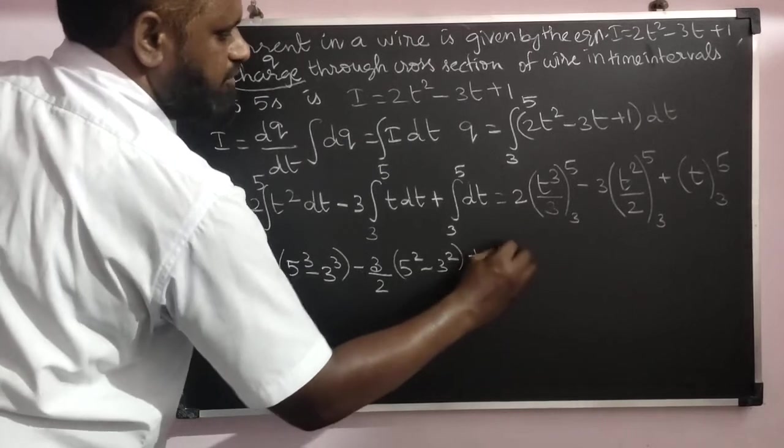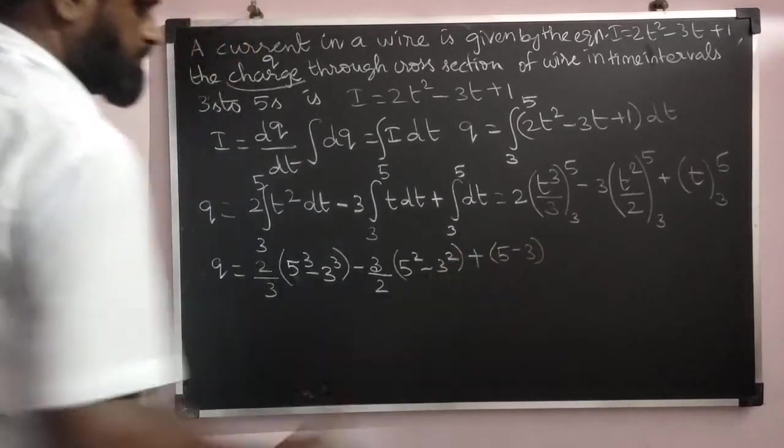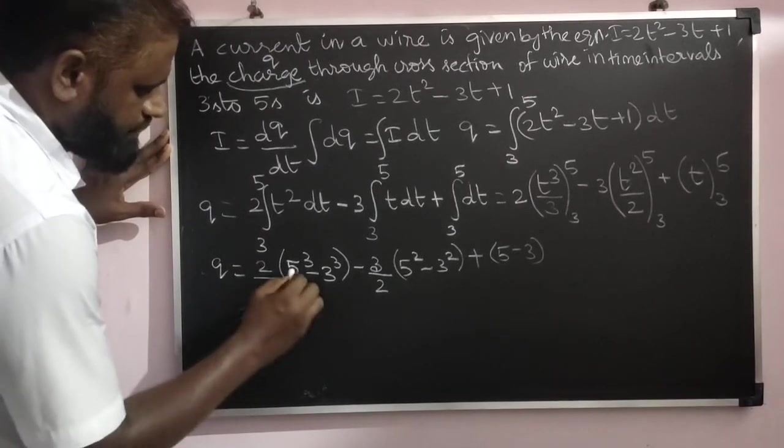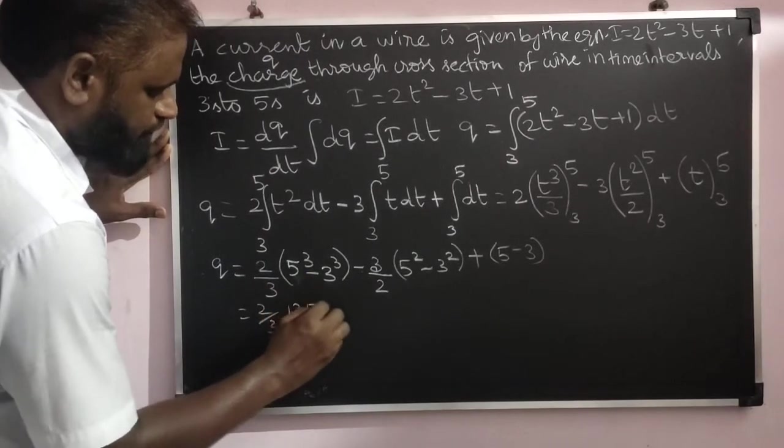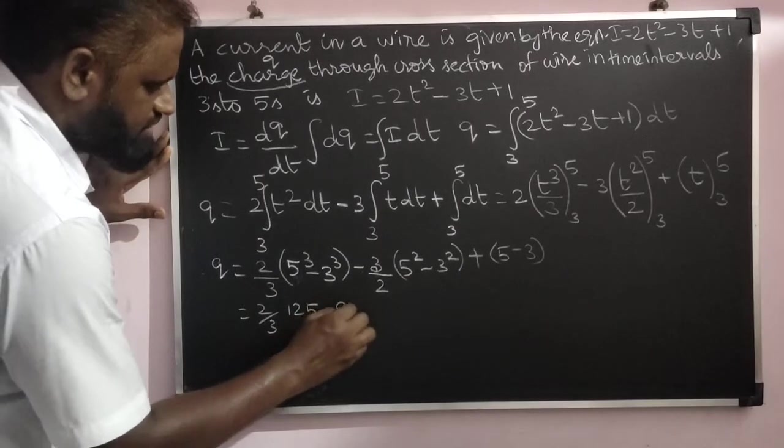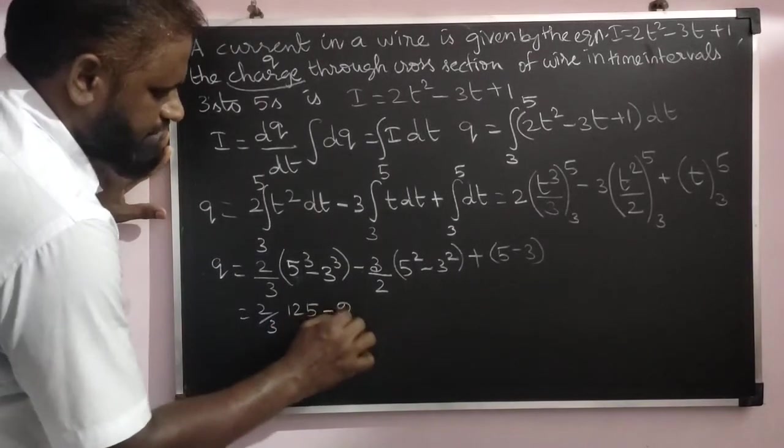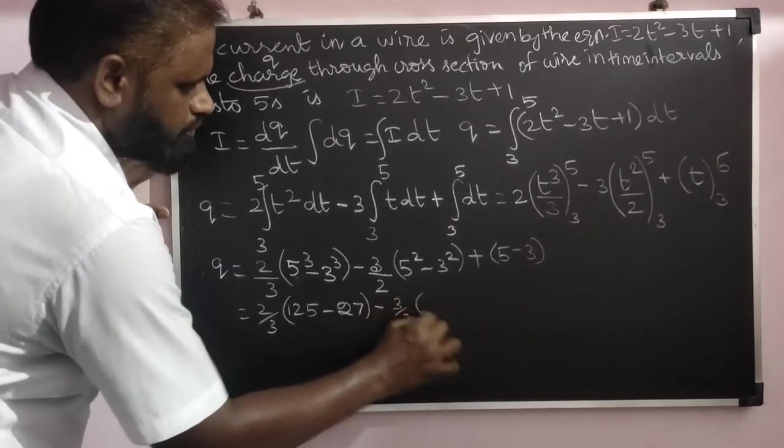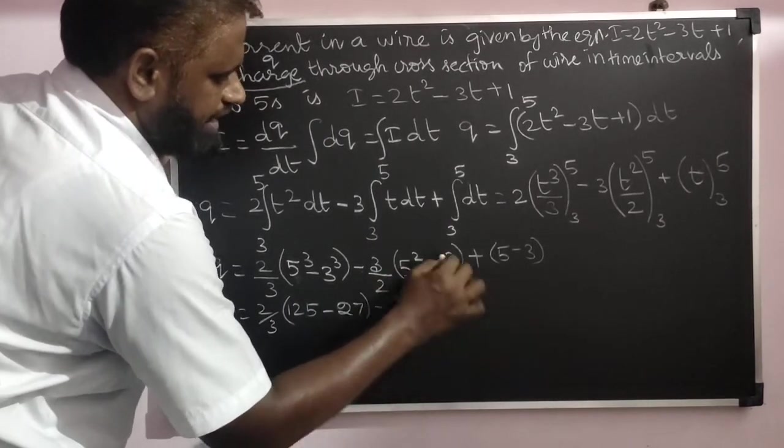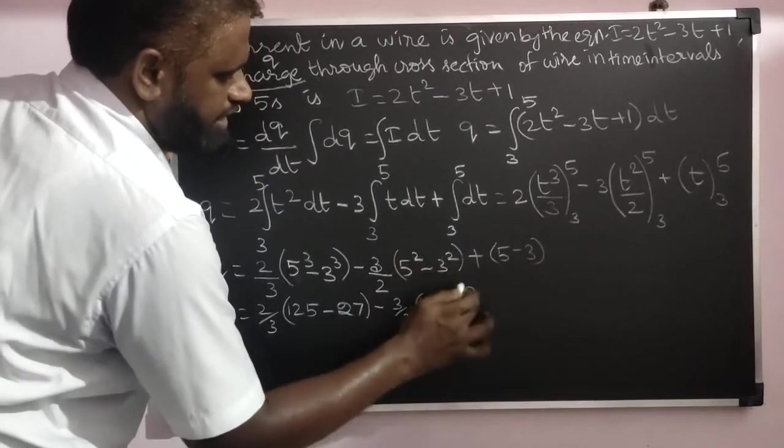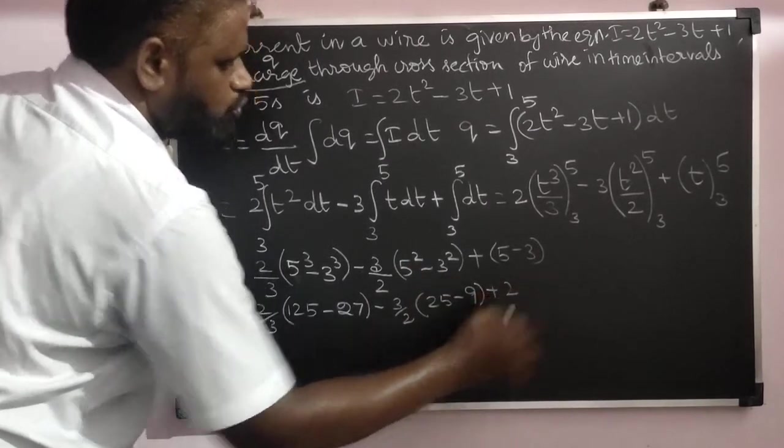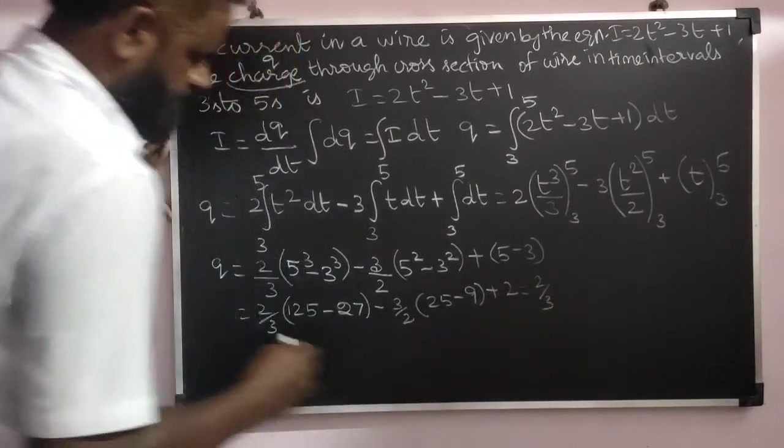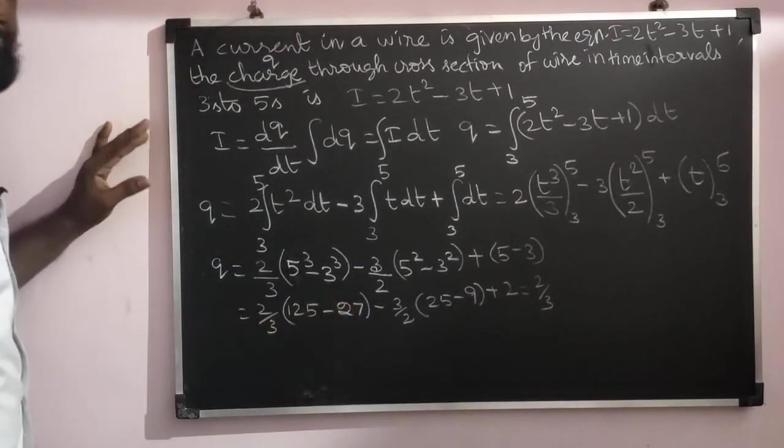Do the calculations: 2/3 × (125 - 27), where 5³ = 125 and 3³ = 27. Then 2/3 × (125 - 27) = 2/3 × 98, minus 3/2 × 16, plus 2.